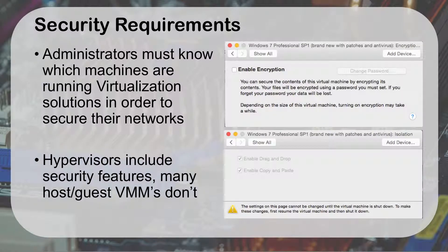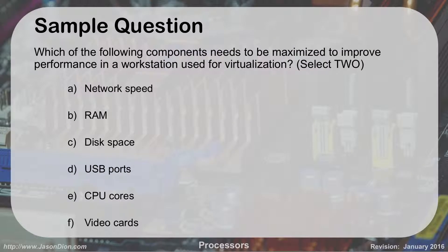Security requirements: administrators need to know which virtual machines are running and which machines are virtualized in order to secure their network. The hypervisors themselves have a lot of security features even if many of the guest virtual machines don't. For instance, in VMware you can encrypt the disk image so that if somebody steals that virtual machine, all the data would be encrypted and unreadable. You can also create a virtual machine that is its own isolated environment and doesn't interact with the host OS, or you can have it fully integrated where you can drag and drop files between the guest and the host. That's less secure than complete isolation, so depending on your use case, you may want to isolate them or not.